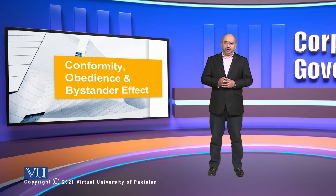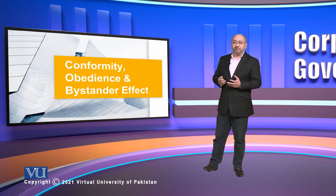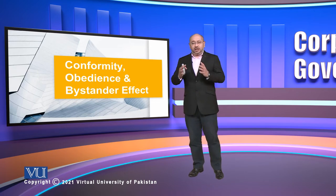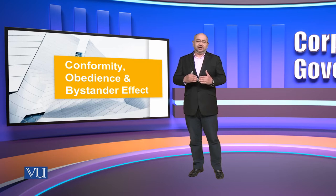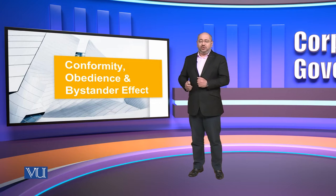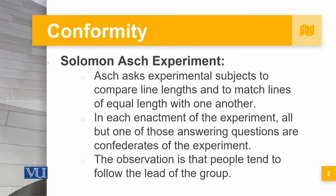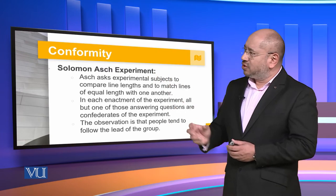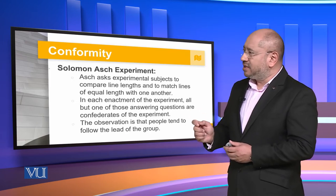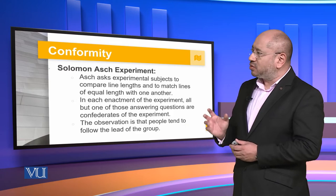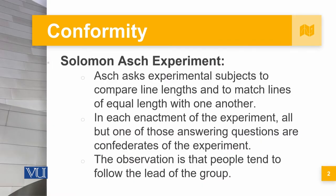We are going to look at some experiments that have taken place. These experiments have global acknowledgement and have been done through extensive research, counter-research, and forward-looking proactive and reactive research. The Solomon Asch experiment comes to mind — in this, Asch asks experimental subjects to compare line lengths and to match lines of equal length. All but one of those answering questions are confederates of the experiment, and the observation is that people tend to follow the lead of the group.